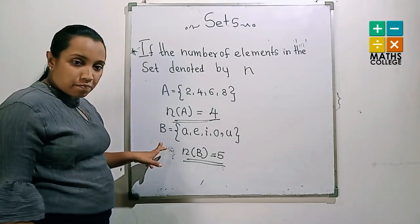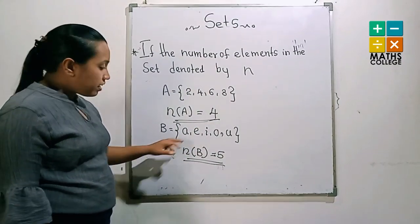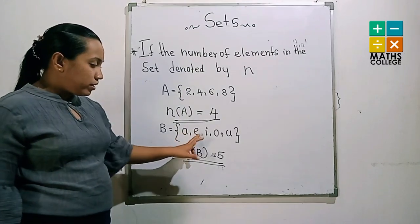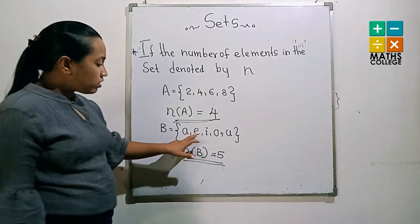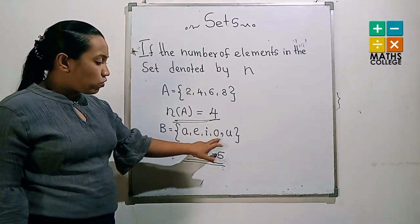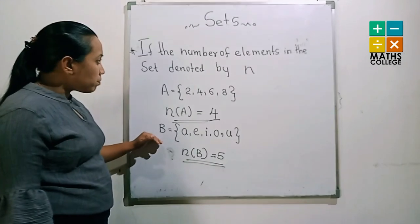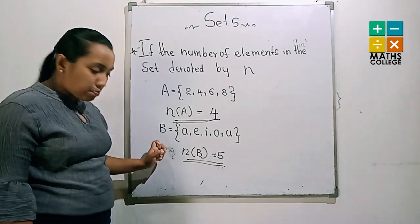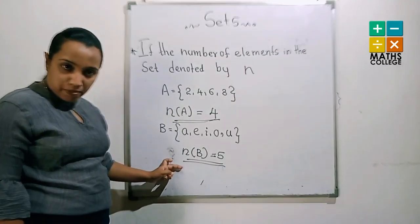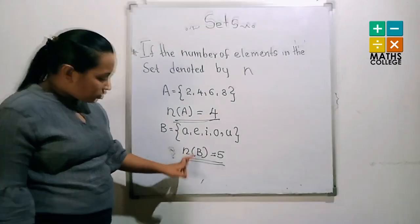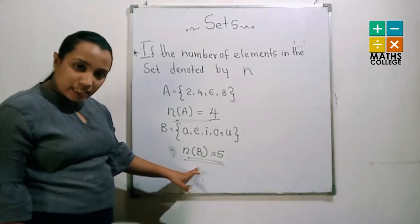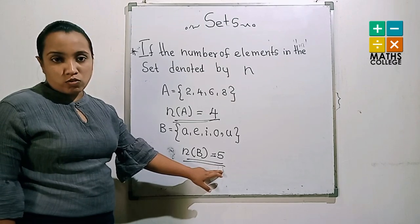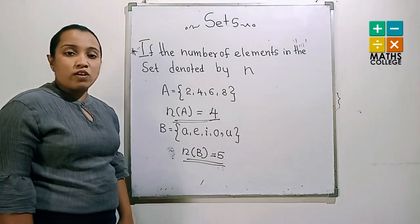Another example: set B equals {A, E, I, O, U}. Counting how many elements: 1, 2, 3, 4, 5. The number of elements in set B can be represented using this symbol with B in brackets, and N(B) equals 5. Okay, let's go next.